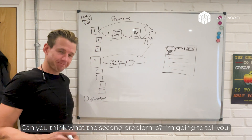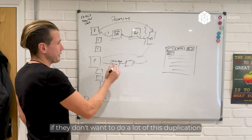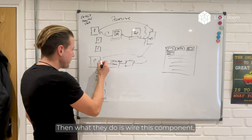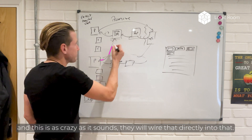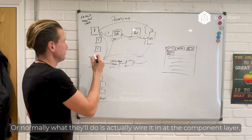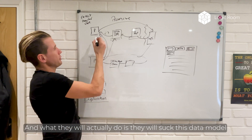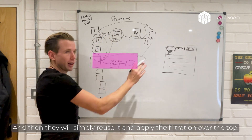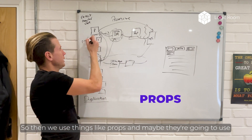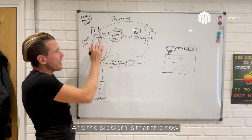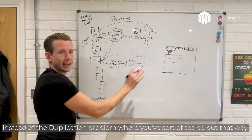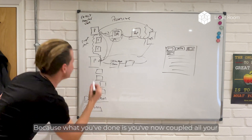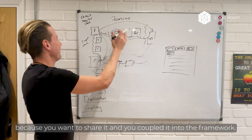The second problem is that if they don't want to do all this duplication — making the same API calls but with slightly different data models — what they do is wire this component directly into that one. Or normally they wire it in at the component layer, which is sort of what React tells us to do. They suck the data model down through that architecture and simply reuse it, applying the filtration over the top, using things like props and state. The problem is that instead of the duplication problem, this creates an even worse problem: coupling. You've now coupled all your data models because you want to share them, and you've coupled them into the framework.